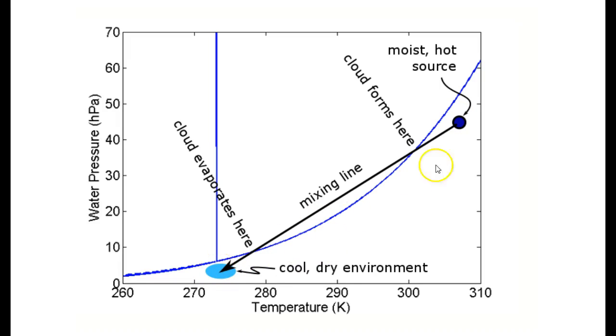As the warm, moist air mixes with the colder, drier air, the temperature and vapor pressure of the moist air parcel becomes the average of the temperature and vapor pressure of the moist, warm air parcel multiplied by the number of moles, all this divided by the total number of moles.